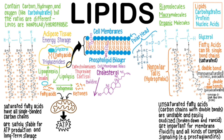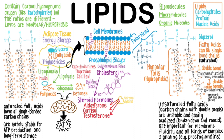Cholesterol serves as the building block of all steroid hormones in the body. Without cholesterol, we can't make the adrenal gland hormones, such as aldosterone, cortisol, and testosterone. In males, the testes require cholesterol to produce testosterone. In females, cholesterol is essential for the ovarian production of estrogen and progesterone.